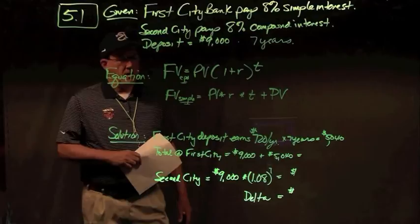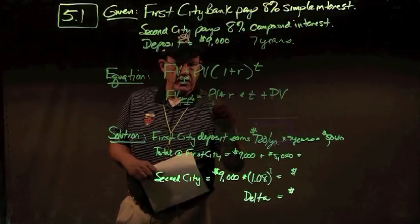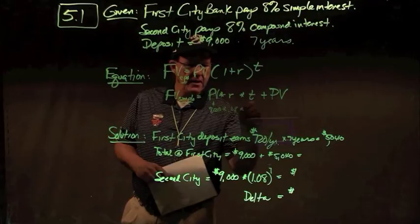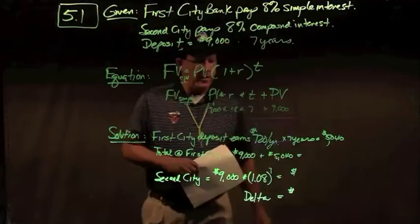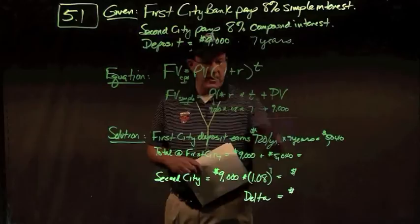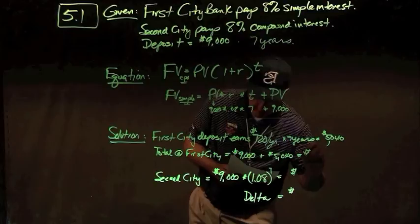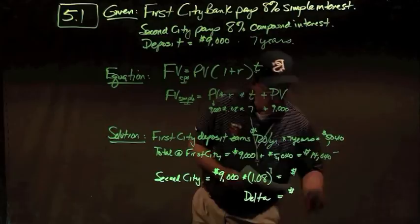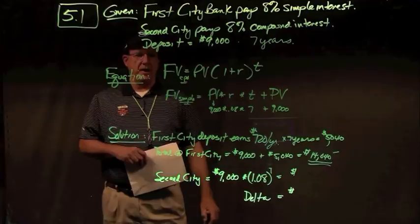At First Citibank, I put in $9,000 principal times r (0.08) times t (7). That gives $720 per year times 7 years, so interest of $5,040. Adding that back to the principal gives a total in First Citibank of $14,040.